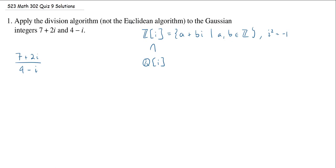Q[i] would look like A plus Bi, but now the A's and B's can be rational numbers. For those of you who know better, this is actually the same as Q(i) with parentheses, because this is actually a field. So we can actually do the division here, and the way we work is we multiply the numerator and the denominator by the complex conjugate of the denominator.